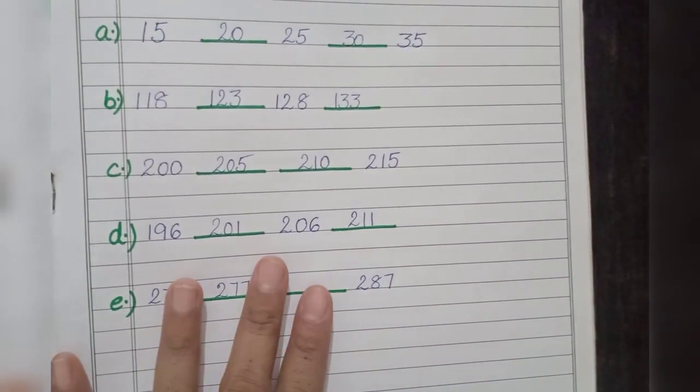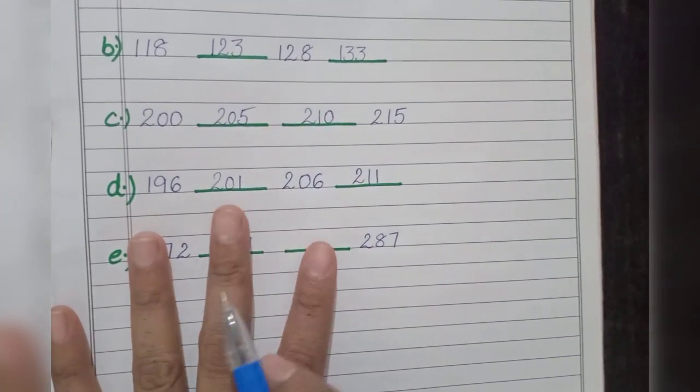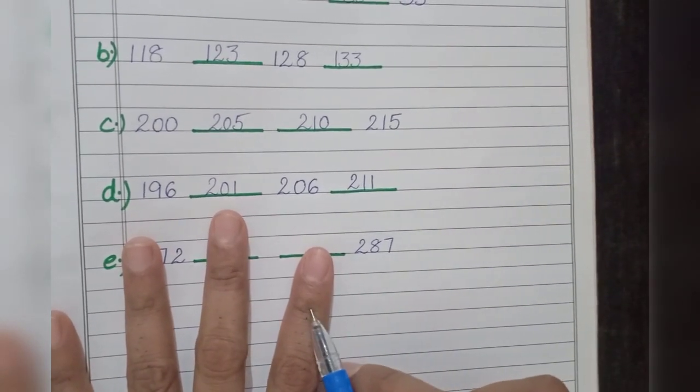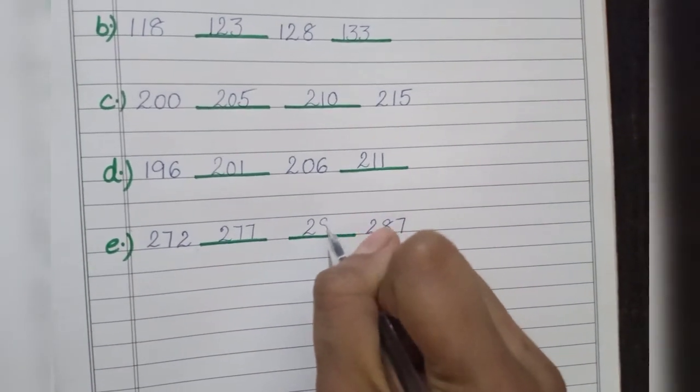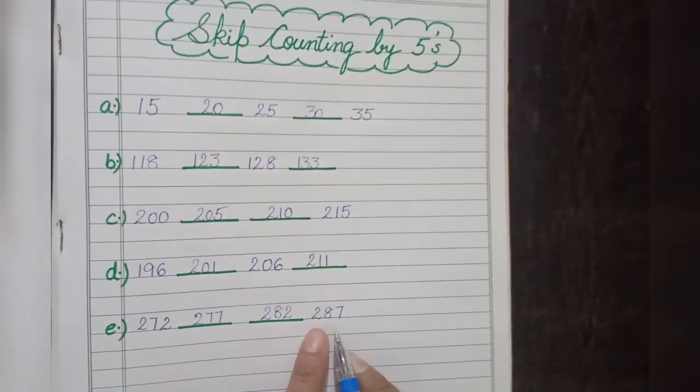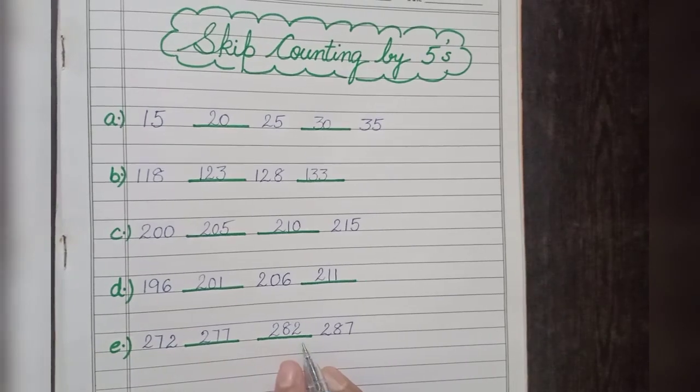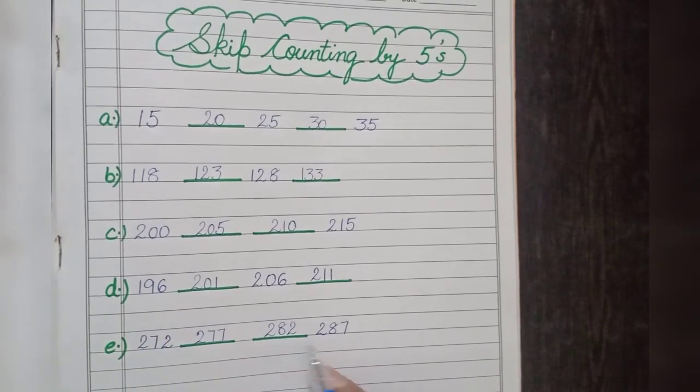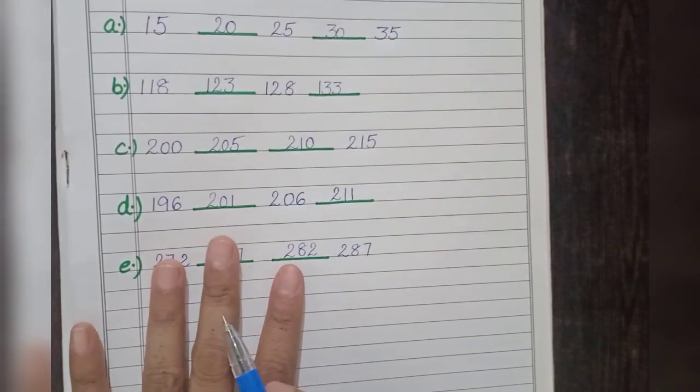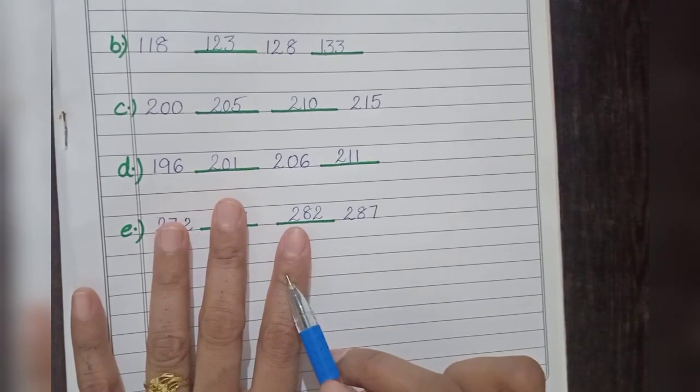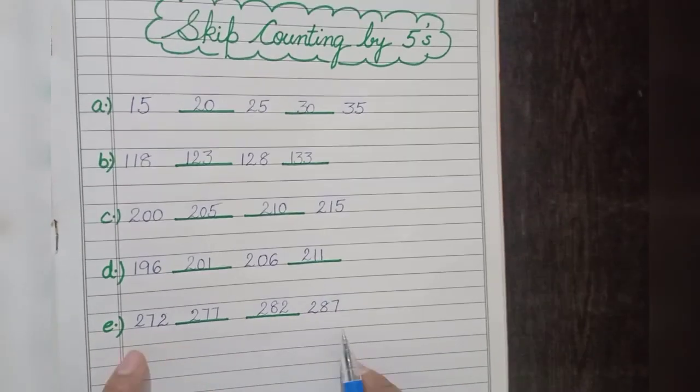277, 278, 279, 280, 281, 282. So I will write 282 over here. If I get 287 after adding 5 to this number, then this line is correct. It's 282, 283, 284, 285, 286, 287. Yes, that means we have done this also correct.